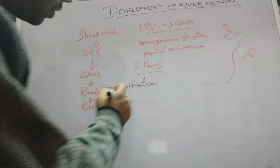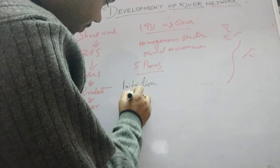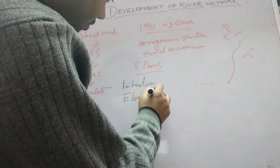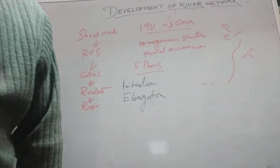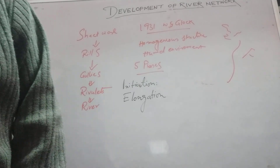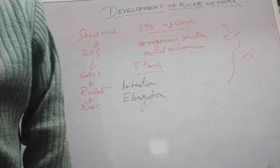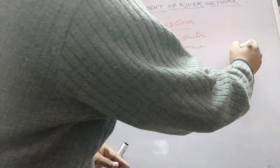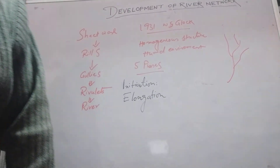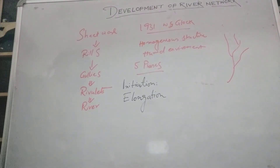The second stage is known as elongation. In this stage, the major streams are elongated by headwater erosion, and newly developed streams also contribute to this process. In this way, the streams are elongated.